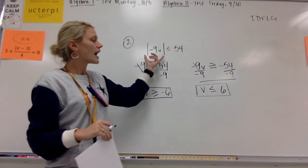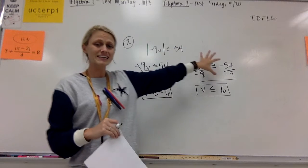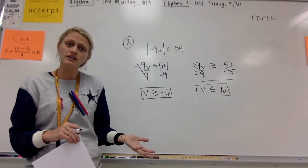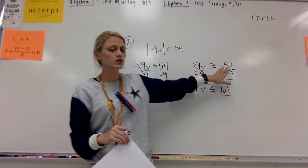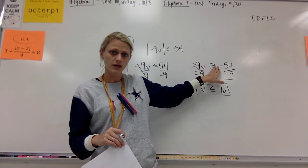So same first step: isolate your absolute value expression. You're going to split it into two separate equations. The difference with this is you have an inequality. So when you set it equal to the negative, you've got to flip that symbol around.